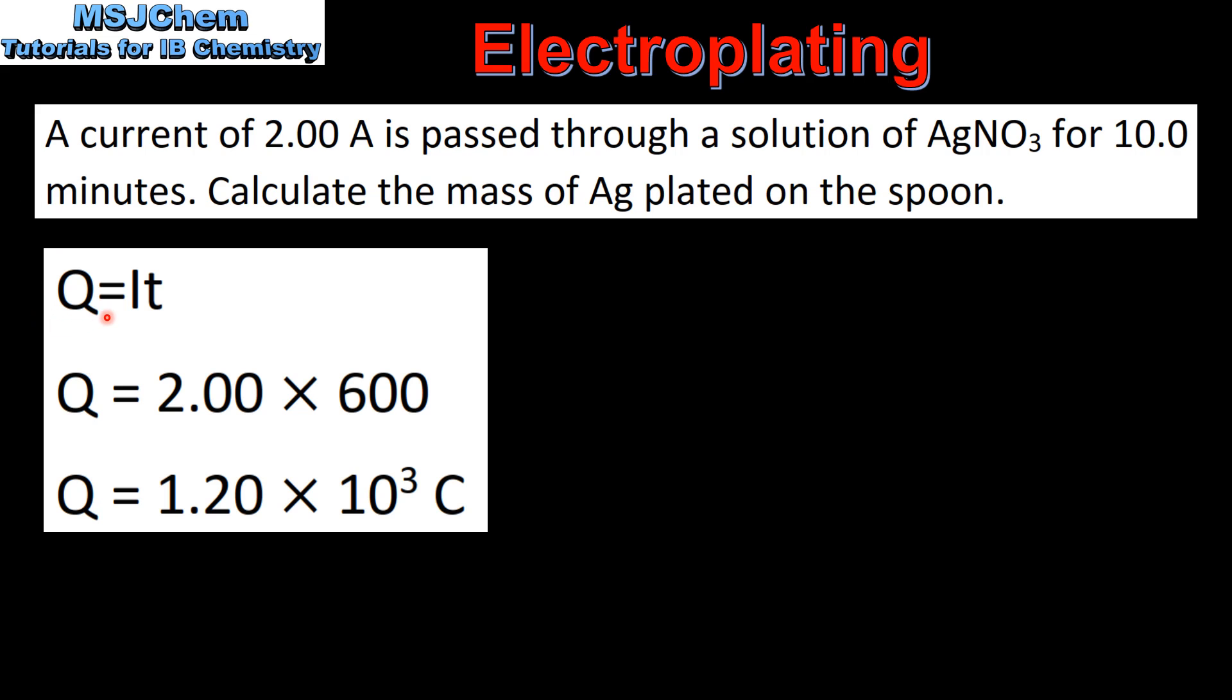First we use the equation Q equals IT, where I is current in amps and T is time in seconds. So we have a current of 2 amps for 10 minutes, which is 600 seconds. This gives us a charge of 1.20 times 10 to the 3 coulombs.